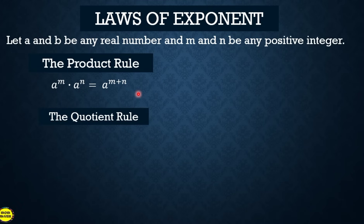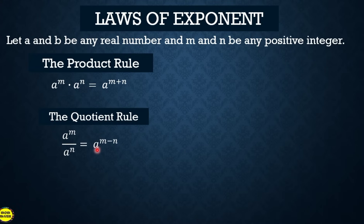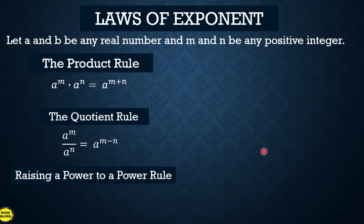The quotient rule: we have a raised to m over a raised to n. For the quotient rule, copy the base and subtract the exponent. Raising a power to a power rule: the quantity a raised to m, raised to n, is equal to a raised to m times n — we multiply the two exponents.